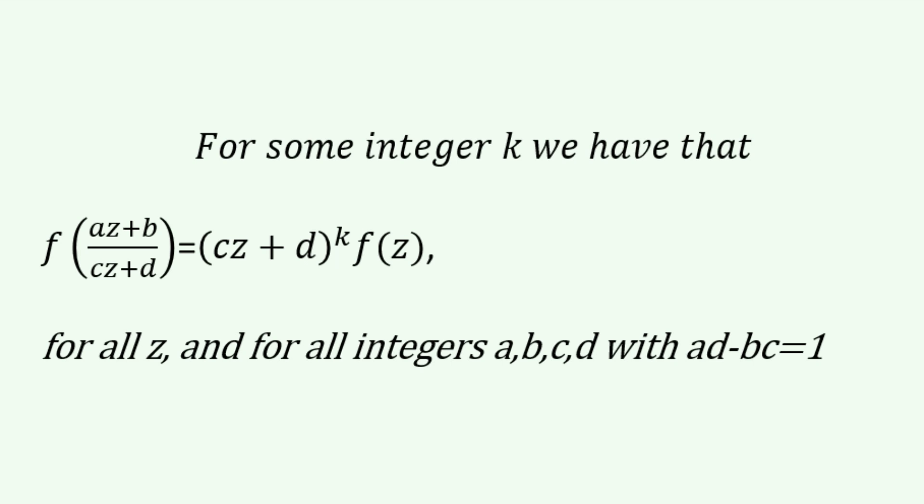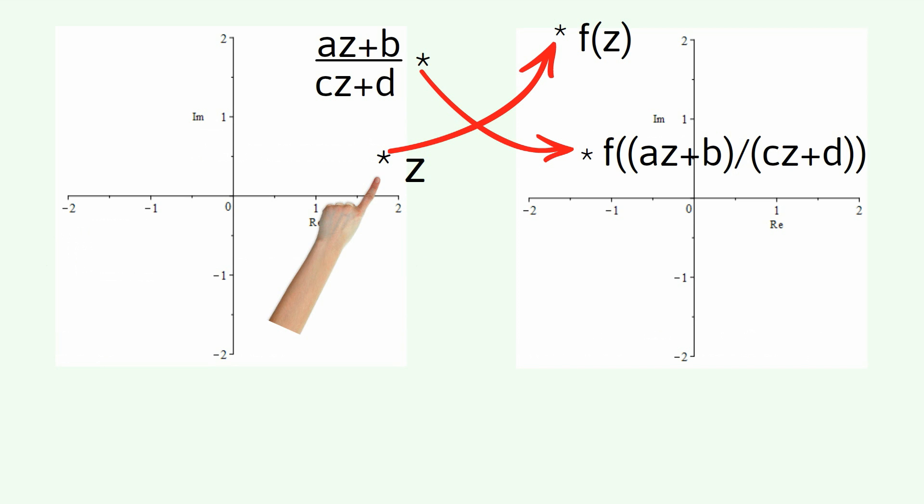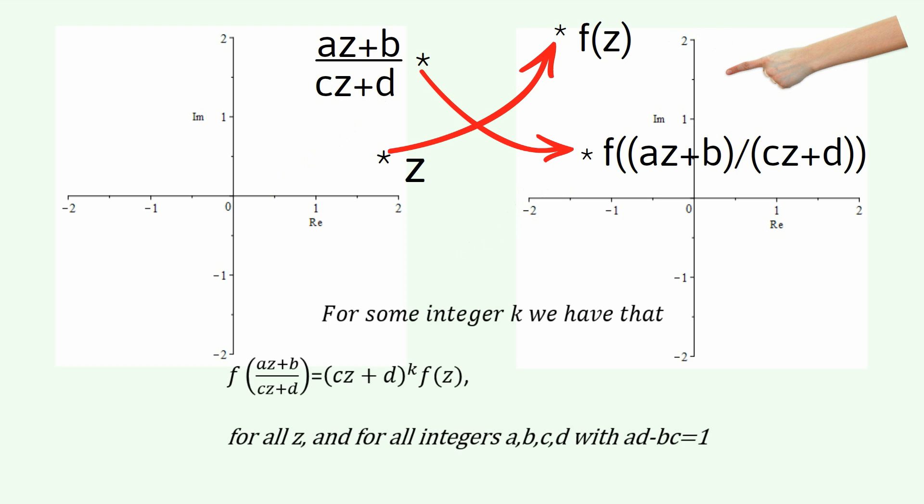So, this is, to go back up here, if this was the point z, we're saying this point over here may be az plus b divided by cz plus d. When we map these two points using the function, we get these two points over here. And the modular form has a very definite relationship between these two results over here. And this applies for every value of z.